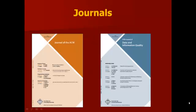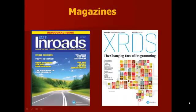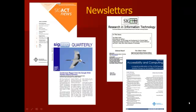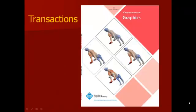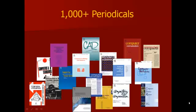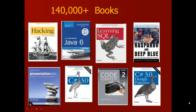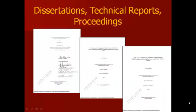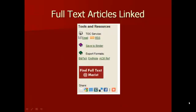The ACM Digital Library provides access to most of the full text of the journals, magazines, newsletters, conference proceedings, and transactions published by the Association for Computing Machinery, as well as the full text of the latest edition of the Encyclopedia of Computer Science. Indexing for over 1,000 periodicals, 140,000 books, thousands of dissertations, technical reports, and proceedings is also included in the digital library. Full text articles available through the Marist College Library electronic subscriptions are linked.